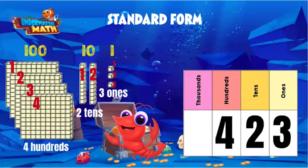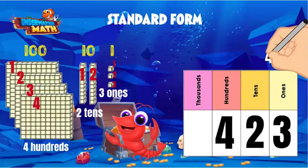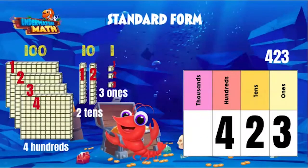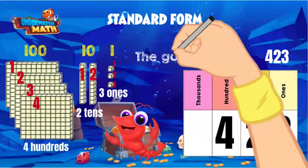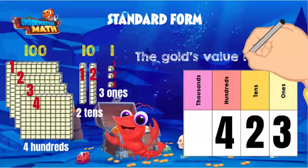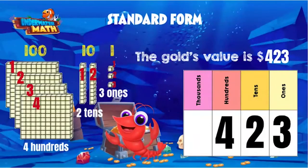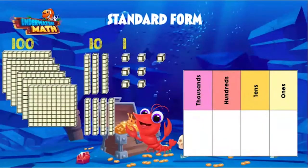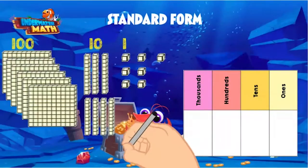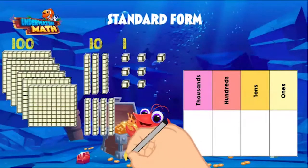When we write it out in our place value chart, we write the number in standard form. It's just the same — so the gold's value is 423 dollars. Thanks for helping me!